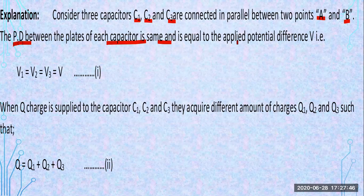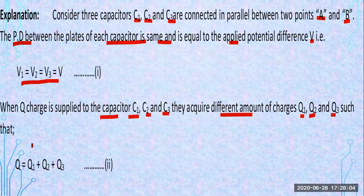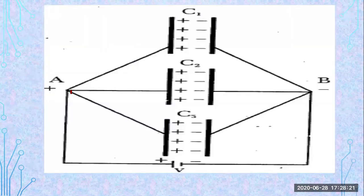So V1 is equal to V2 is equal to V. When charge Q is applied to capacitors C1, C2, and C3, they acquire different amounts of charges Q1, Q2, and Q3, such that the total charge supplied by the battery is distributed among the three capacitors: Q1 for C1, Q2 for C2, Q3 for C3.